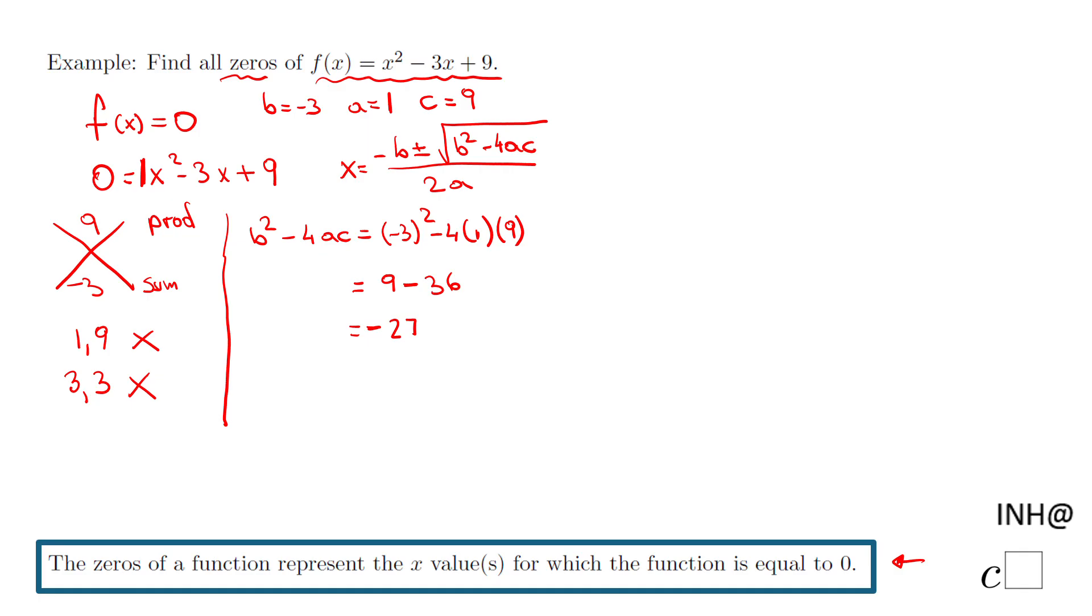We notice already something very interesting here, which is this discriminant is negative. That's one of the reasons we cannot use factoring. The discriminant is less than zero, negative. So we do not have real solutions for this equation. We don't have real zeros for this function. However, we have complex solutions for this equation.